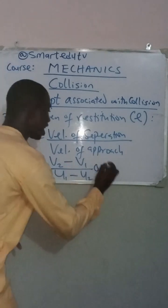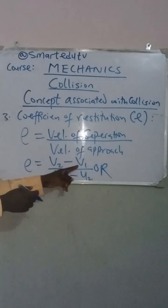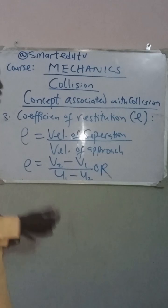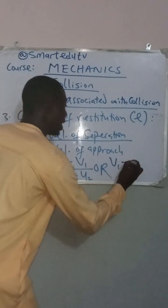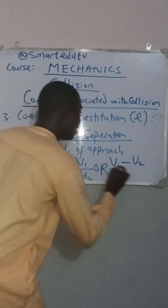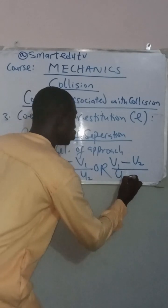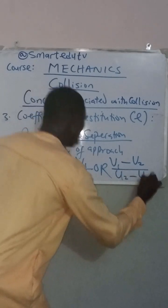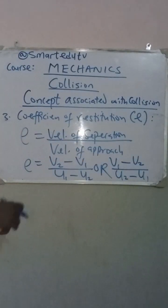Or it can also be written, if we want to write V1 first: E = (V1 − V2) / (U2 − U1). These are the concepts that we are going to be discussing under collision, and they will help us solve problems involving collision.